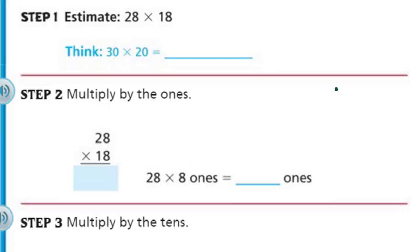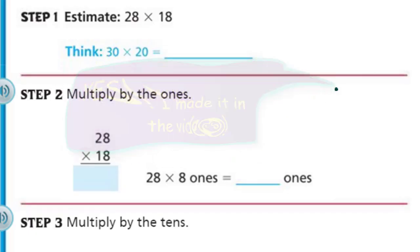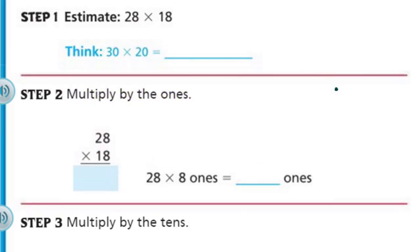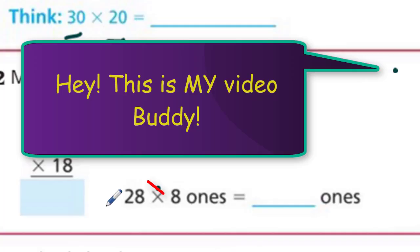Let's take a look at step one. Step one says estimate, that's what we did the last time. See, 28 is a number that's only in the tens place, so we'd want to round it to probably the nearest tens — they have 30. And then we also have 18, a number in the tens place, so we're going to round it to 20. Estimating is getting us a number that's close to where we want to be, but it's not exact.